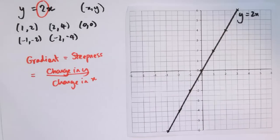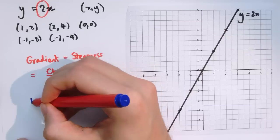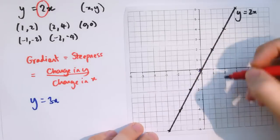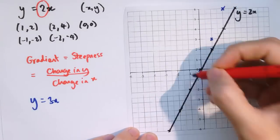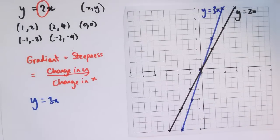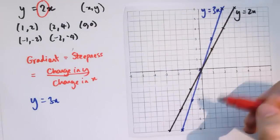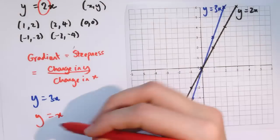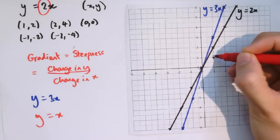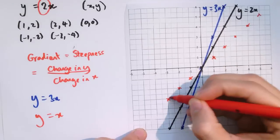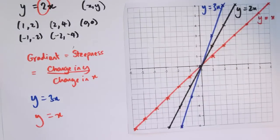If we change that value, we change the steepness of the line. So if we had y equals 3x, it would still go through the origin, but now through 1, 3 and 2, 6; minus 1, minus 3 and minus 2, minus 6 — a graph with gradient 3. We could also have y equals x, which is like y equals 1 times x. That gives all points where x and y coordinates are the same — a straight line with gradient 1.